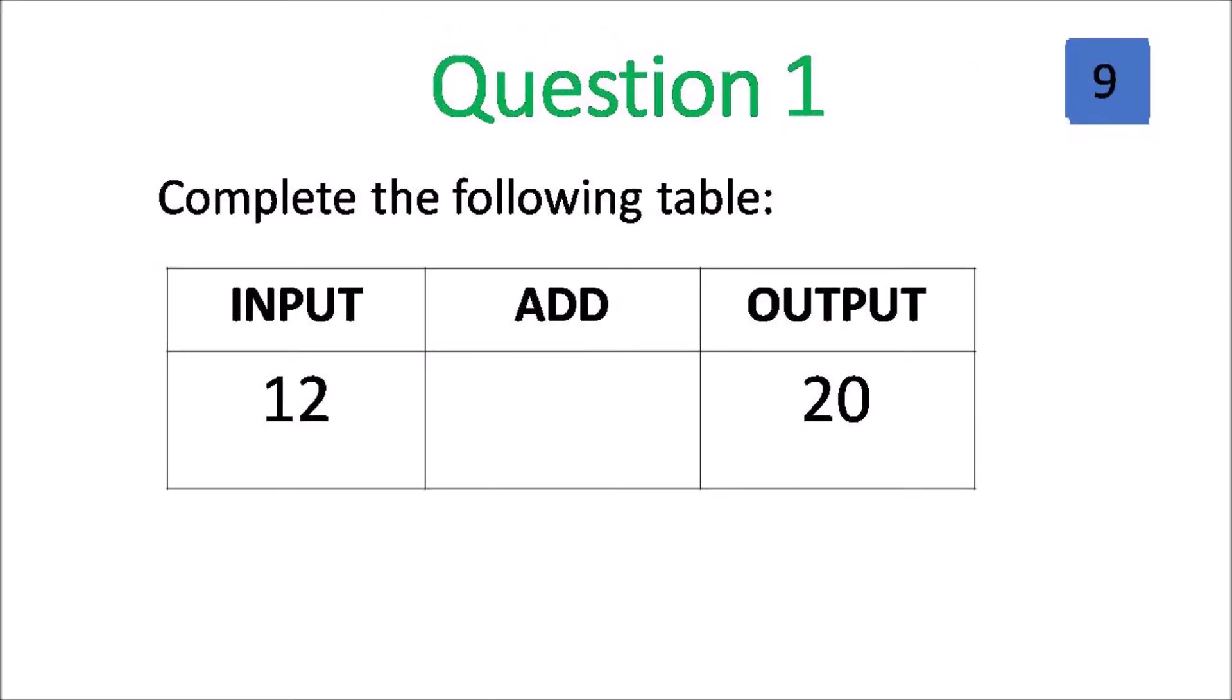Here we go question 1. Complete the following table: input, add, output. Go ahead, find the number that's missing and put it in this table. Grade 3, this is addition without regrouping.